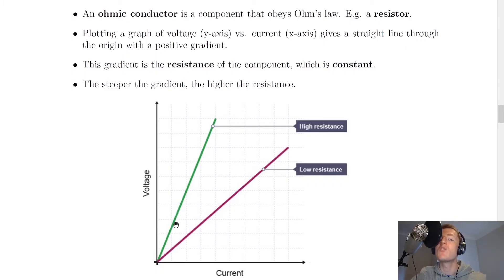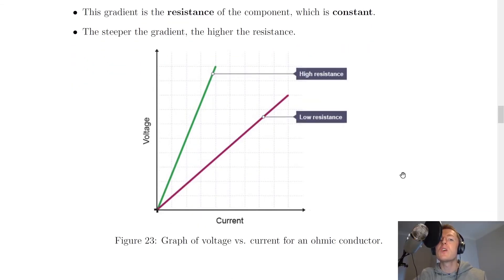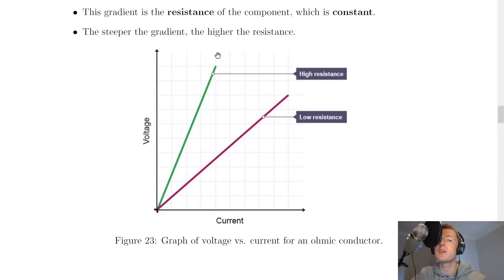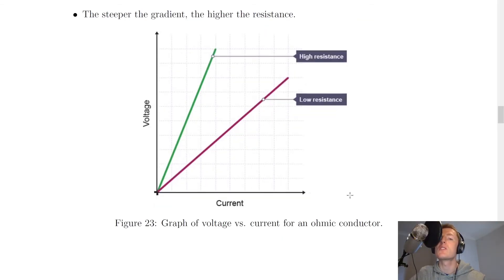The resistance is constant because the gradient of a straight line is the same at all points. The steeper the gradient, the higher the resistance. So for an ohmic conductor, a high resistance gives a steeper line, i.e. a steeper gradient and a larger resistance value, while a lower resistance means a lower gradient and a less steep line.